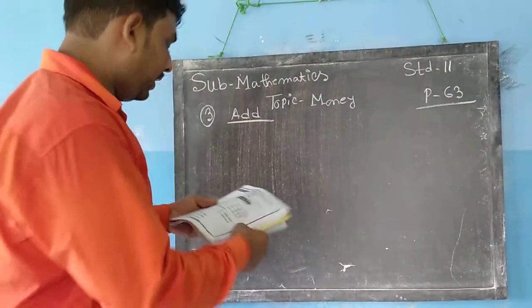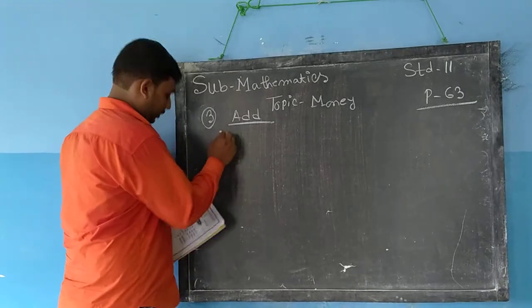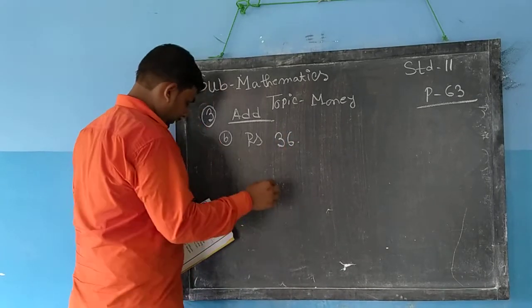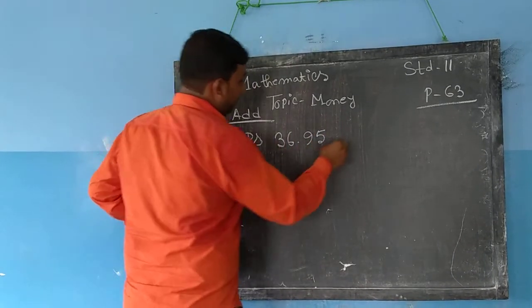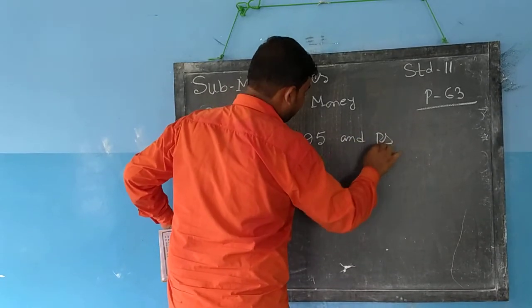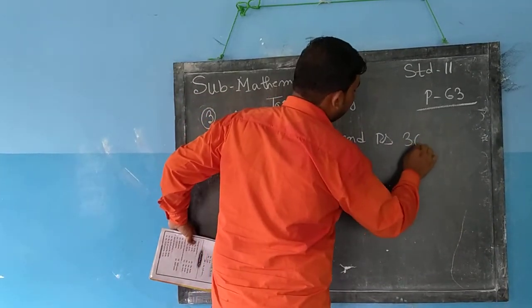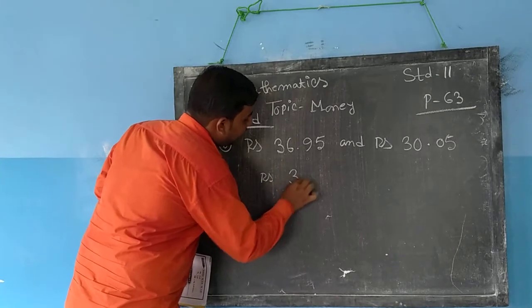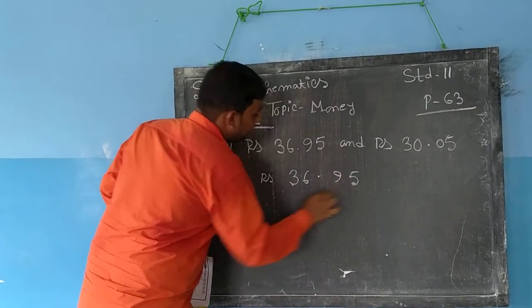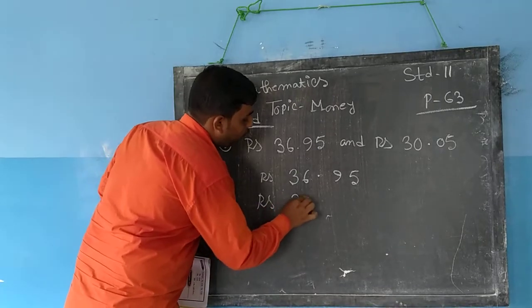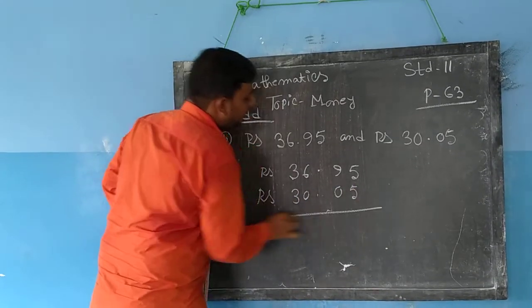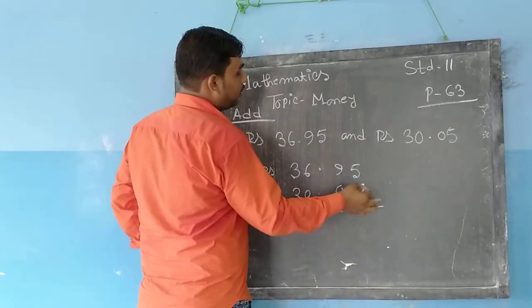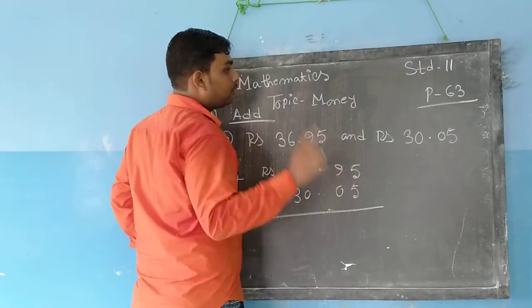Now, Rupees 36.93 and Rupees 30.0 — we can add Rupees 36.95 and Rupees 30.0 together.